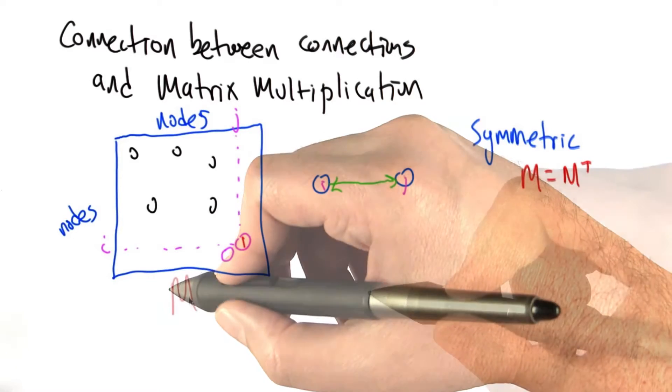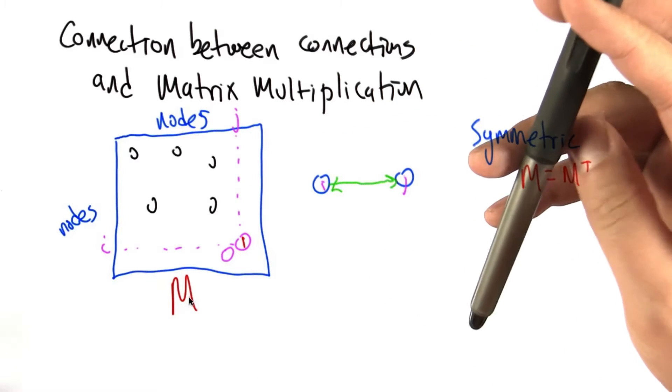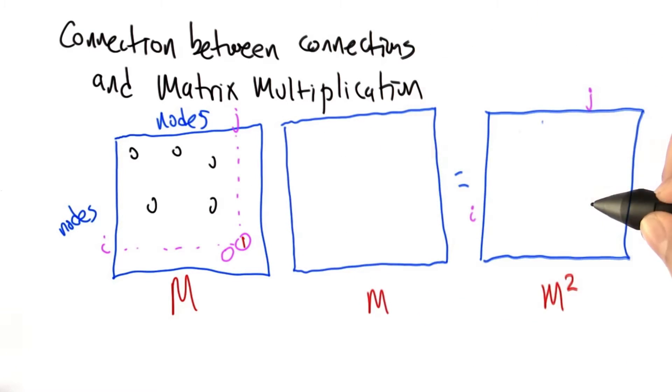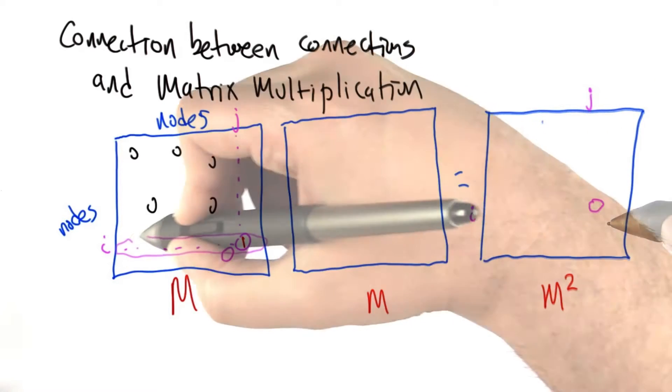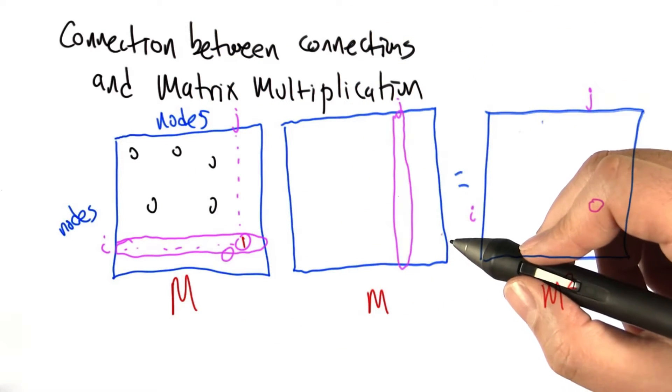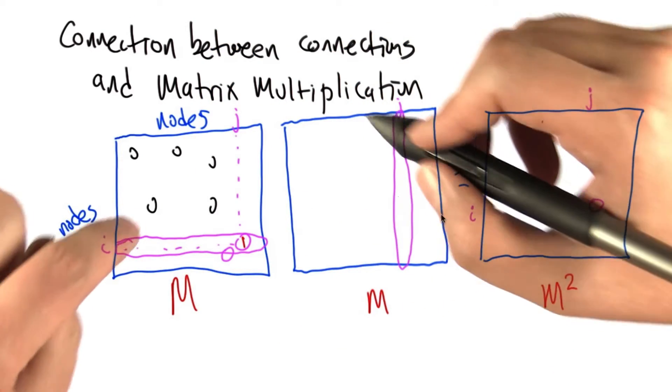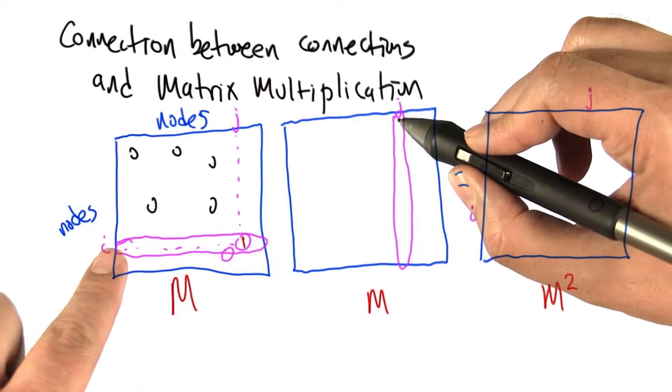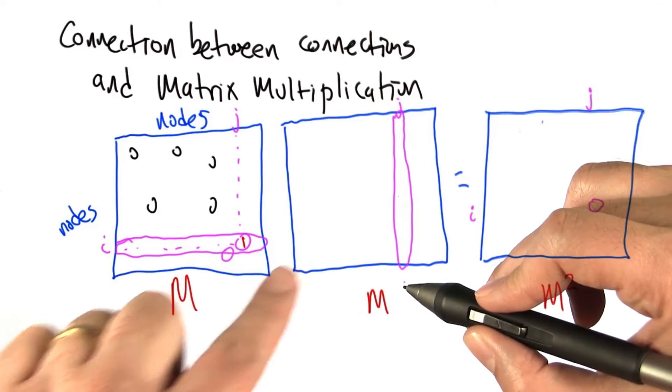So let's call this matrix M, and let's think about what it means to multiply M times itself. In matrix multiplication, the way we fill in the ij entry of the product, we take the i-th row of the first matrix and the j-th column of the second matrix. I always need two hands whenever I think about matrix multiplication. You go across this one and down this one at the same time.